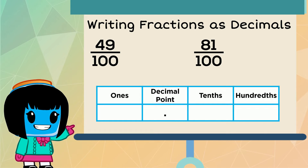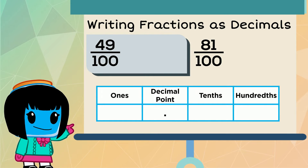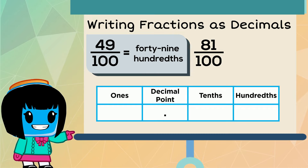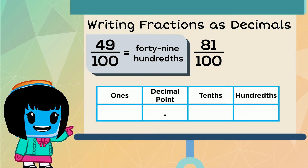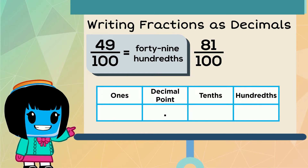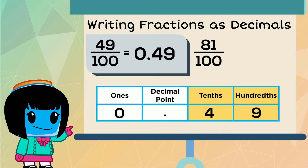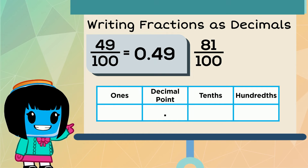The fraction 49 over 100 is read as 49 hundredths, so we write this decimal as... Let's try another one.